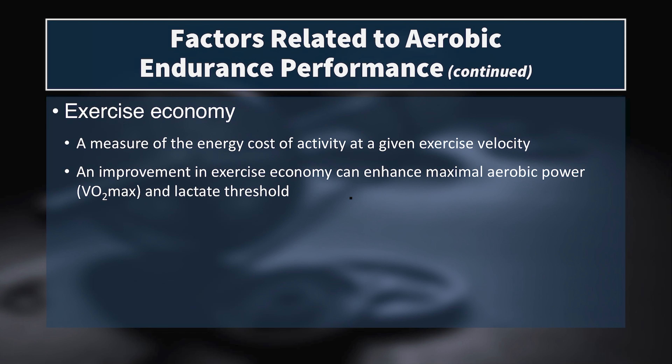Another key indicator is exercise economy—a measure of the energy cost of an activity at a given exercise velocity. Two individuals running at seven minutes per mile can use very different amounts of energy: one with good form, low ground contact times, upright posture, and strong aerobic enzymes in type 1 muscle fibers may cruise using little energy, while another with poor technique, higher body weight, and long ground contact times leaks energy everywhere. Runner A clearly has the better running economy at that pace.